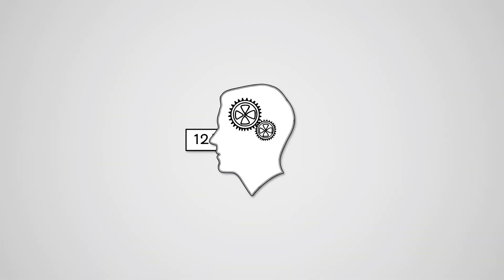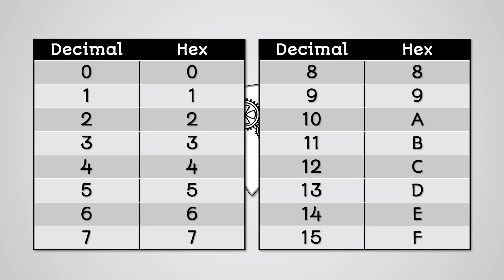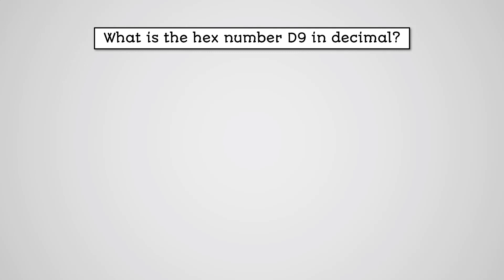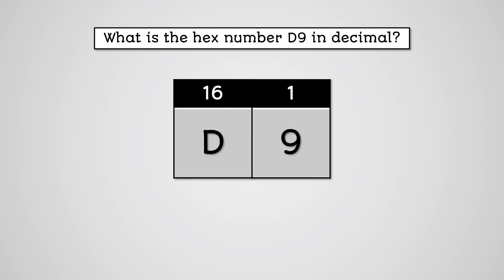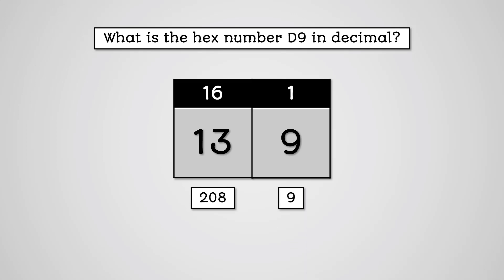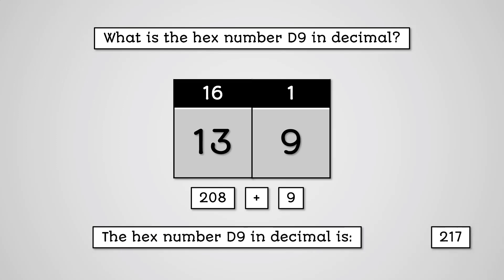So we can convert from decimal to hexadecimal — but what about the reverse? Converting from hexadecimal to decimal is straightforward. All we need is our hex table from the beginning of this lesson. Let's try converting the hex number D9 to decimal. We have D in the 16 column. D is the hex value for 13, so we multiply 13 by 16, which gives us 208. In the ones column we have 9. Now we add these two numbers together: 208 plus 9 equals 217. So the decimal value for D9 is 217.